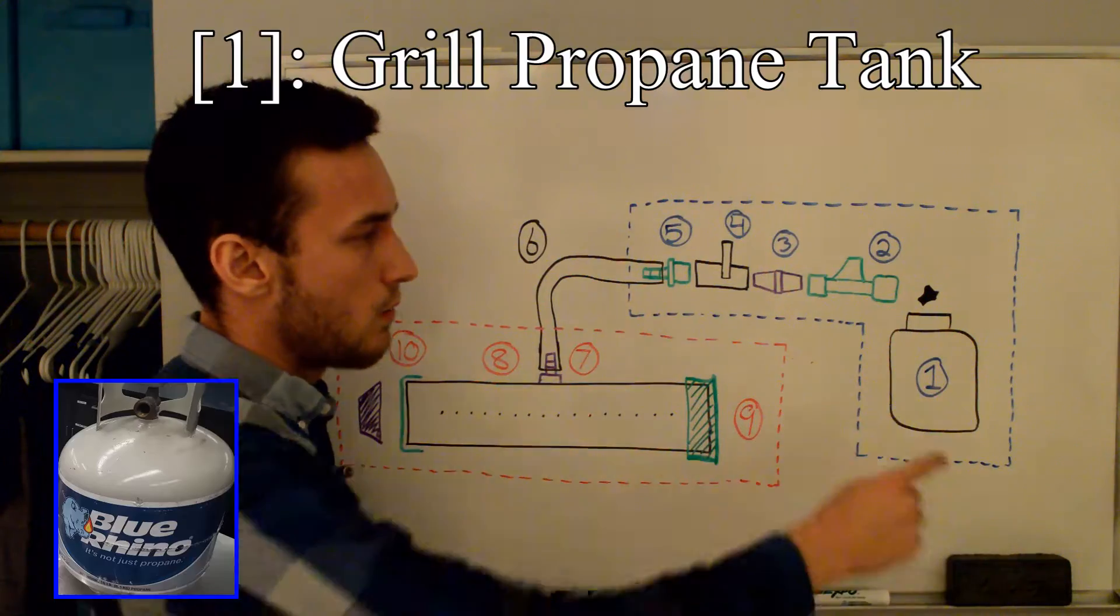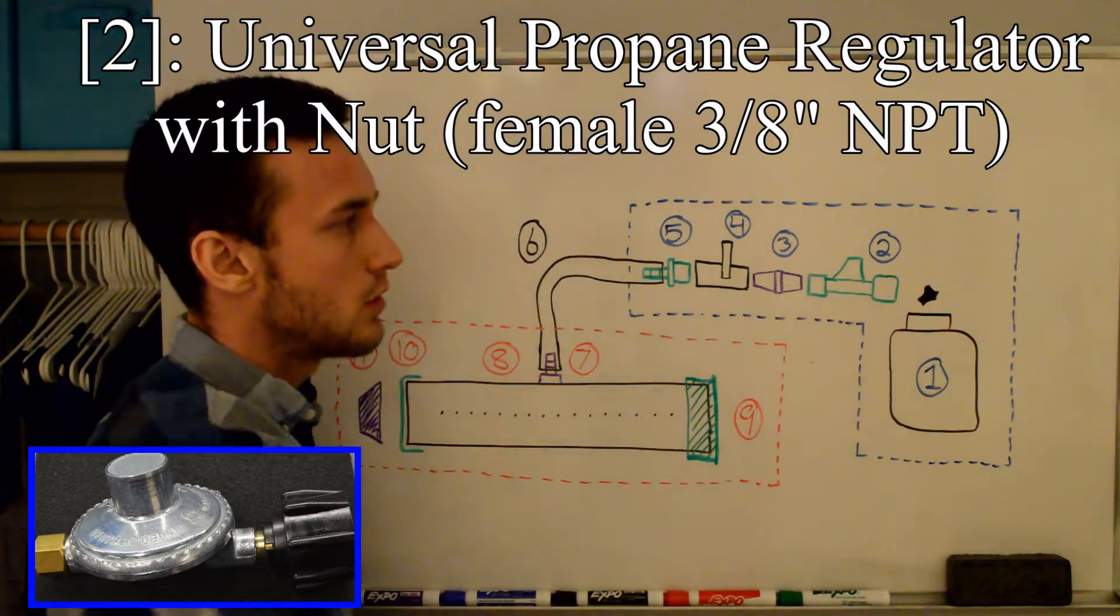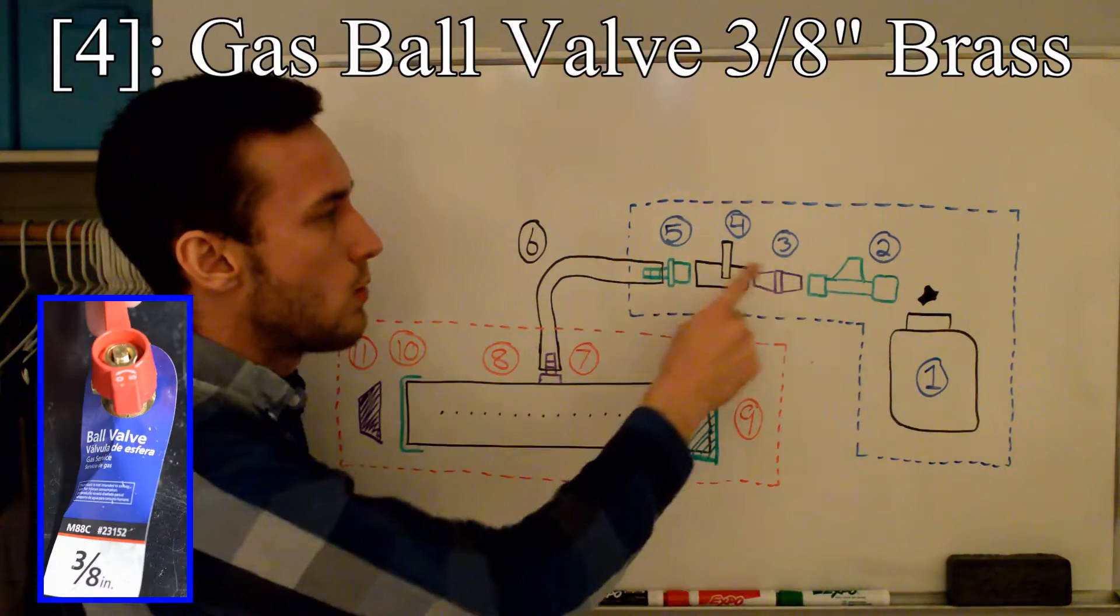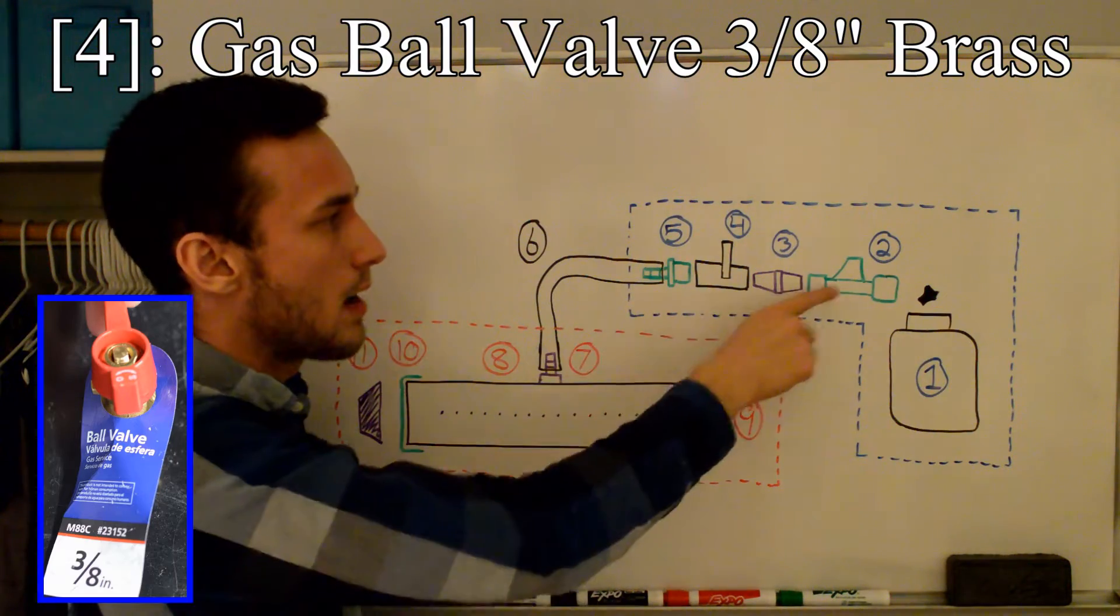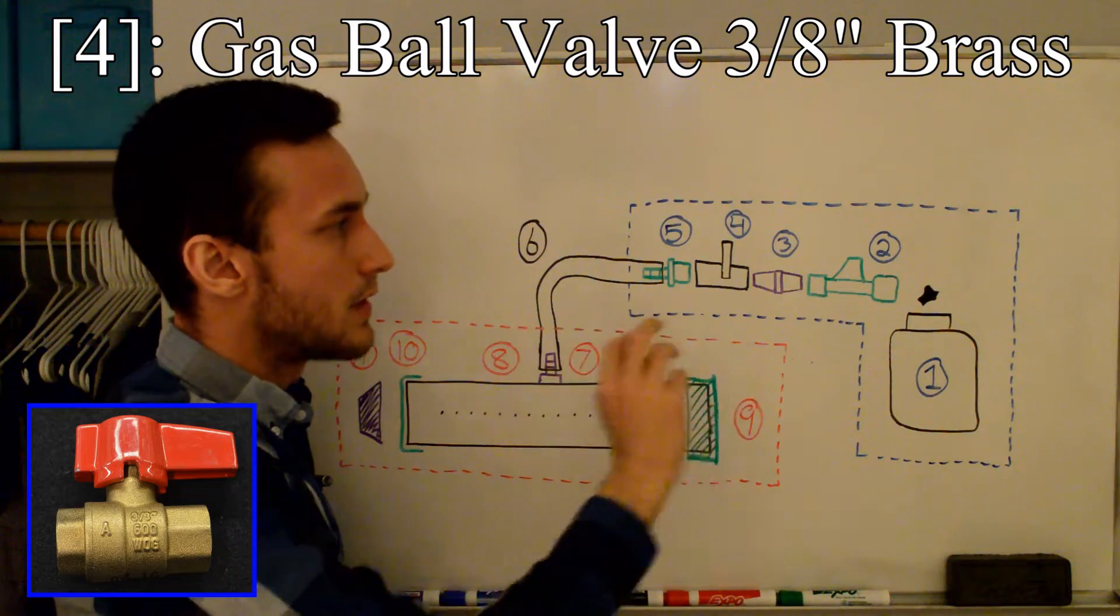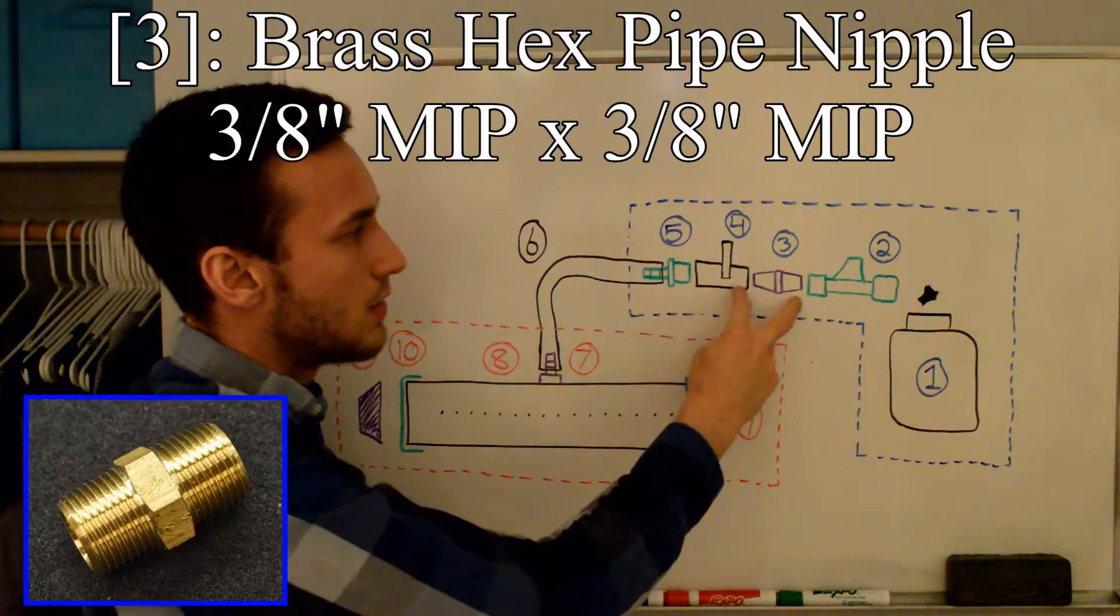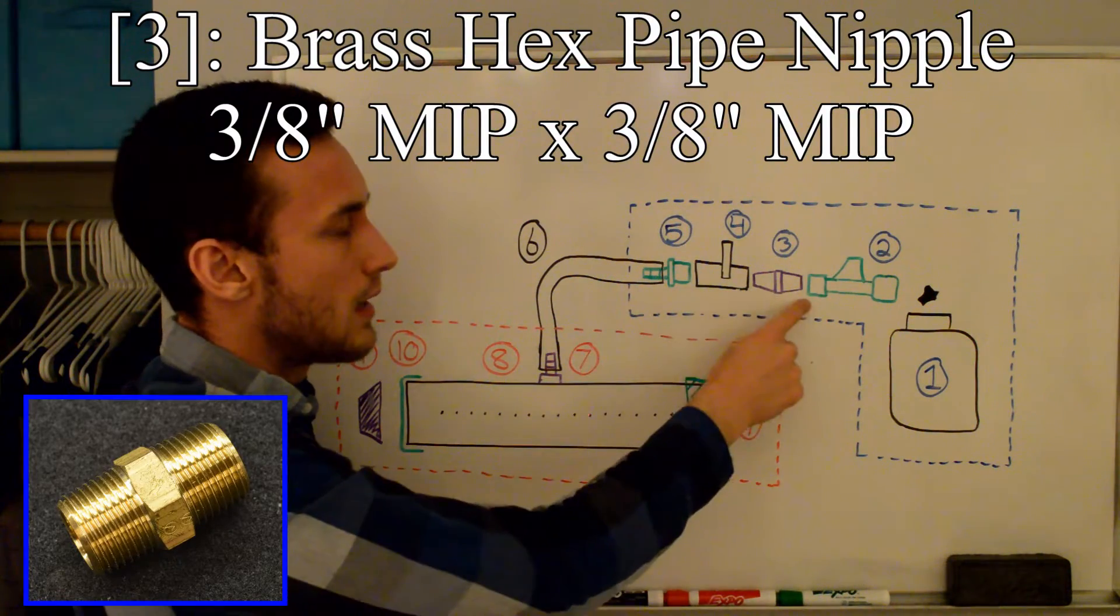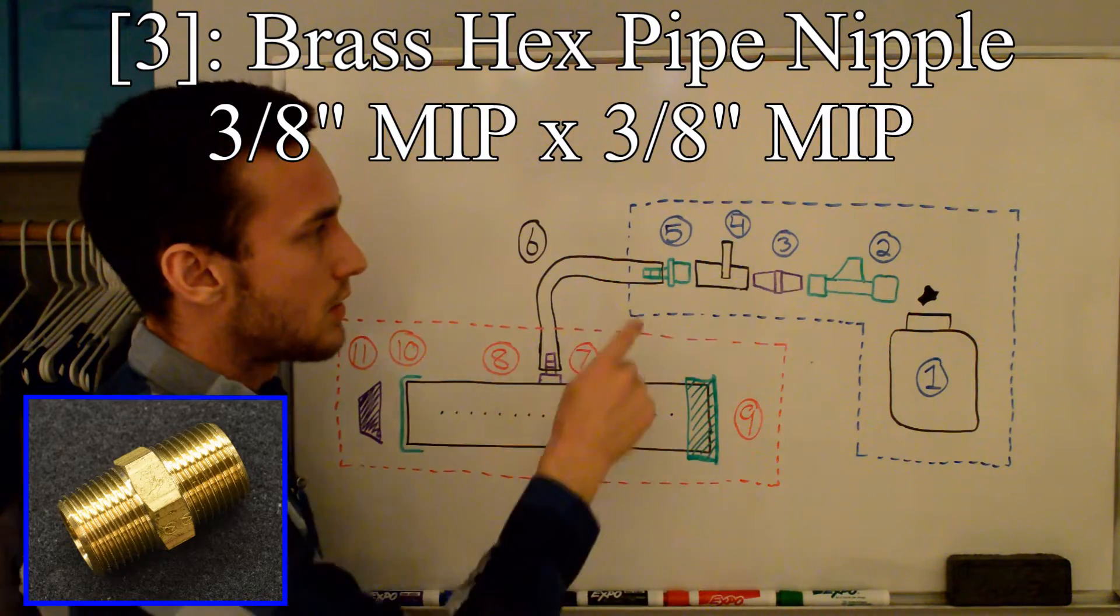Alright, so here's the overview of the setup. We have one, a propane tank, to which a regulator is attached. That's number two, which brings the pressure from the propane tank down to a usable, safe level. We want a little bit more adjustability in the gas pressure that we have coming out of the regulator, because this one does not have a valve attached to it. So I bought another valve, a ball valve, that's number four, and to connect these two together, because both the ball valve and the regulator have female attachments, we use a hex pipe nipple, that's number three, to attach the two.